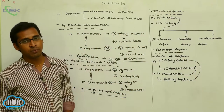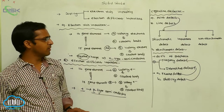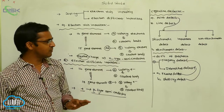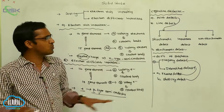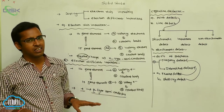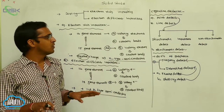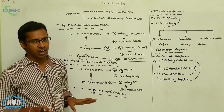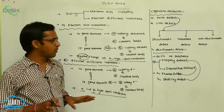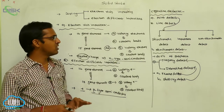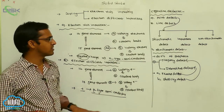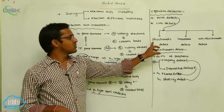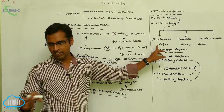These are your stoichiometric defects. In this defect, there is no change in composition or constant particles — there is no disturbance. That is your stoichiometric defect.